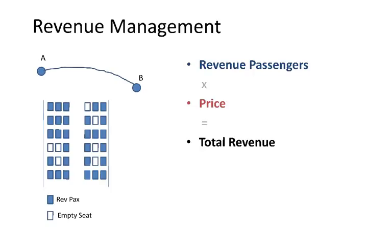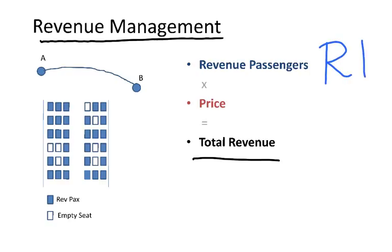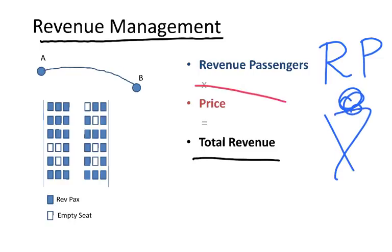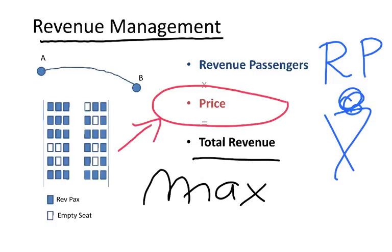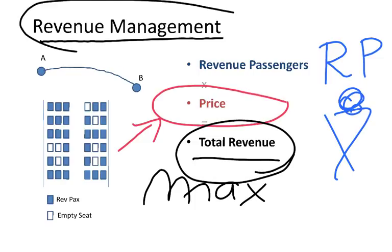The area of the airline dealing with pricing is normally called revenue management. The way they calculate total revenue is by multiplying revenue passengers — that means passengers paying for their tickets — times the price they are paying. The key is to set up prices in a way that maximizes total revenue. That is the main purpose of these people.